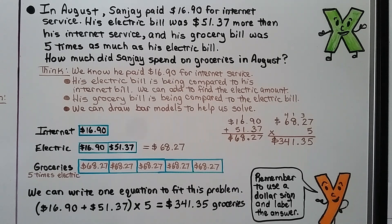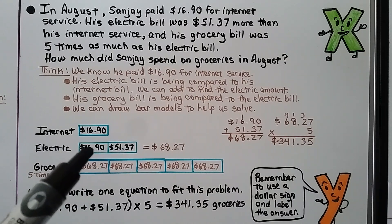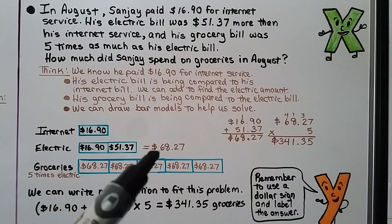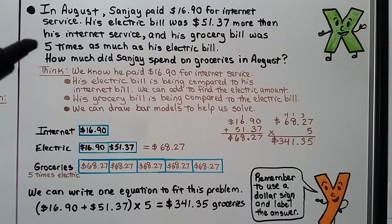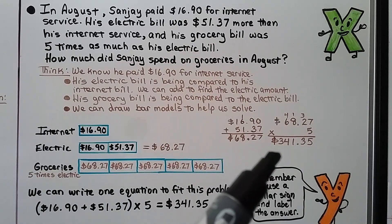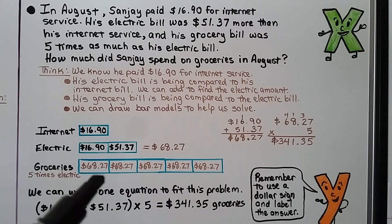In August, Sanjay paid $16.90 for internet service. His electric bill was $51.37 more than his internet service, and his grocery bill was 5 times as much as his electric bill. How much did Sanjay spend on groceries in August? We know the internet service is $16.90, and the electric bill is being compared to that — it was $51.37 more. So we add the internet service plus the extra amount: $16.90 plus $51.37 equals $68.27 for the electric bill. We then represent the grocery bill with a bar model of 5 boxes each containing $68.27.